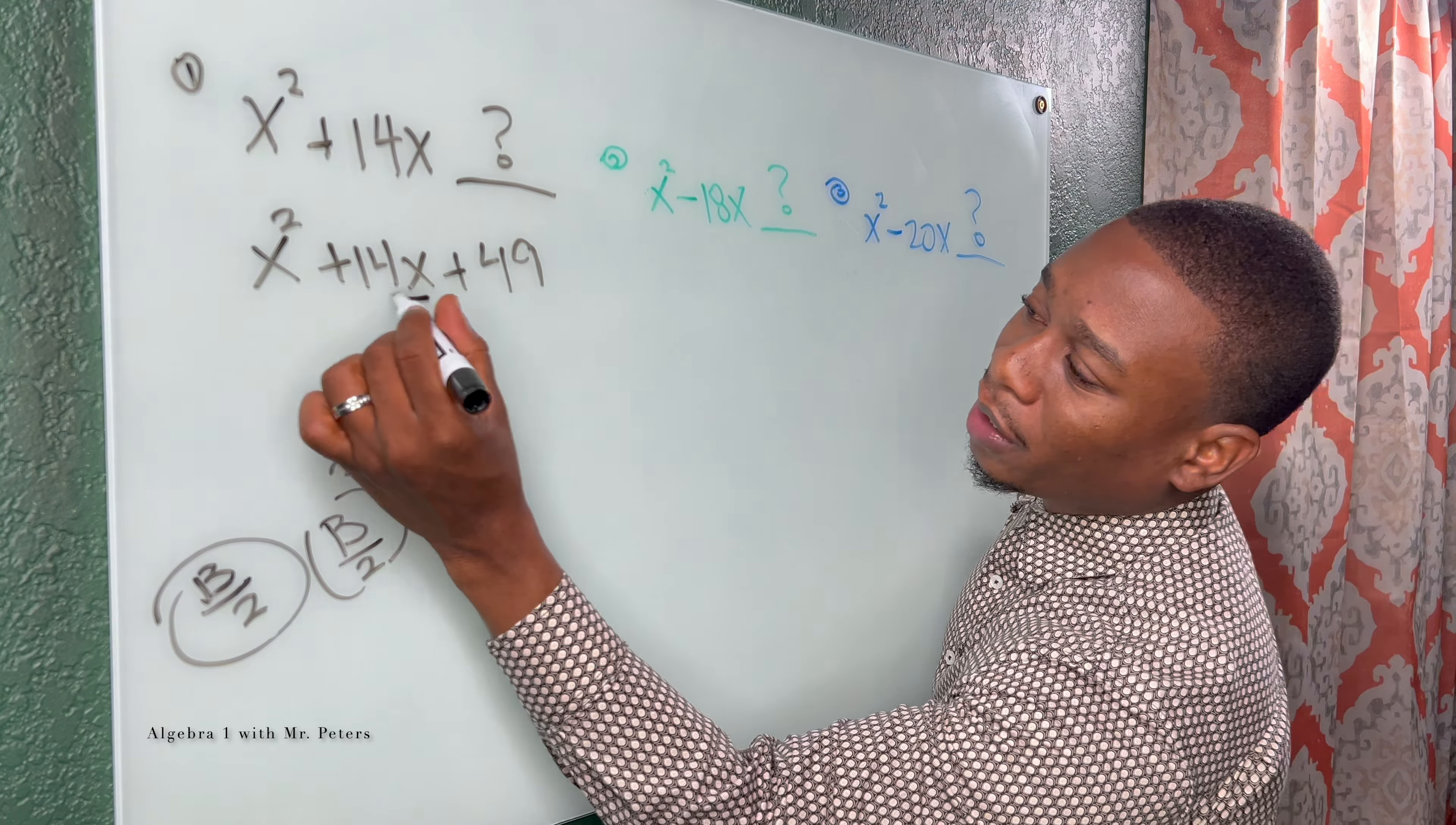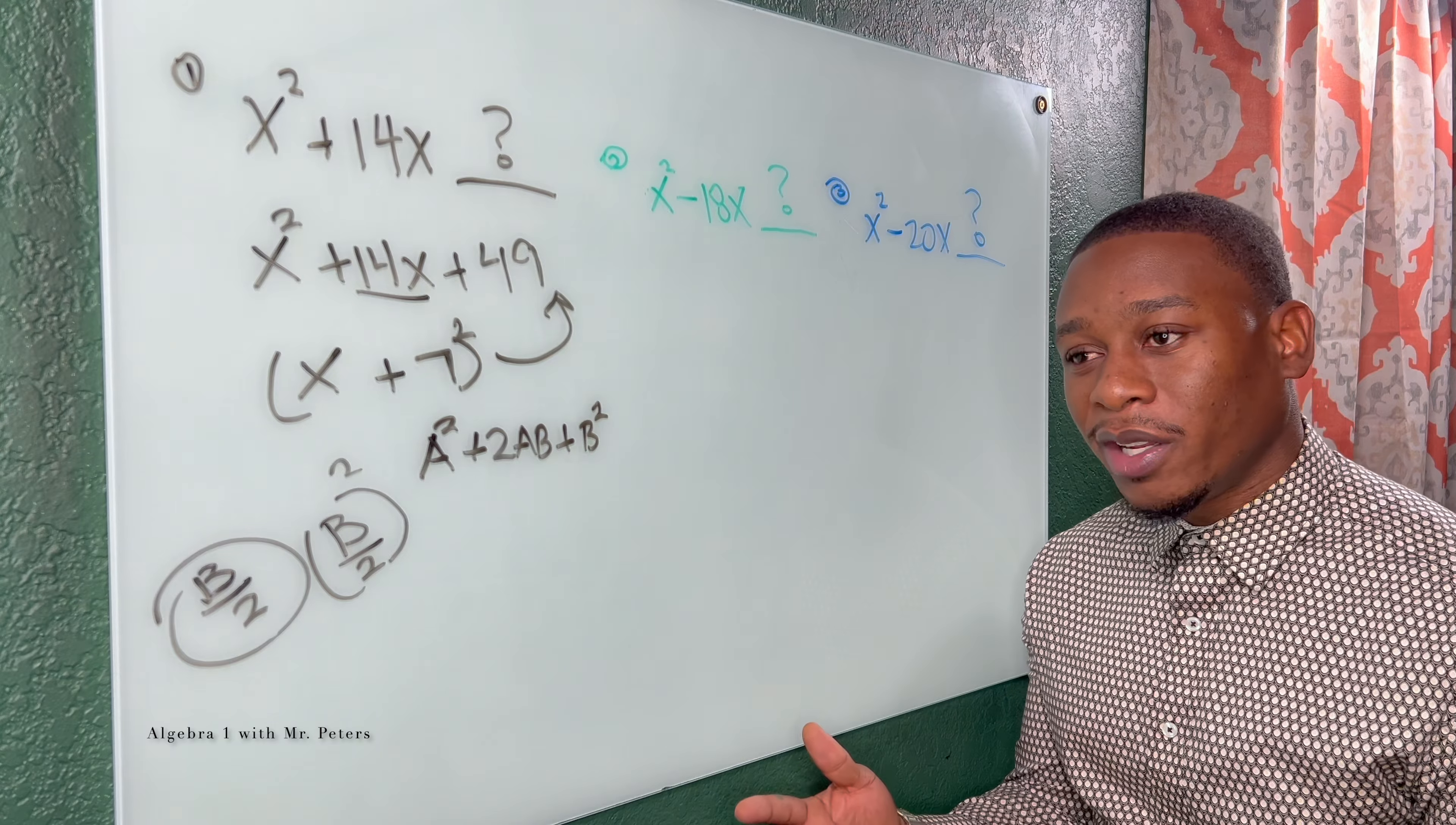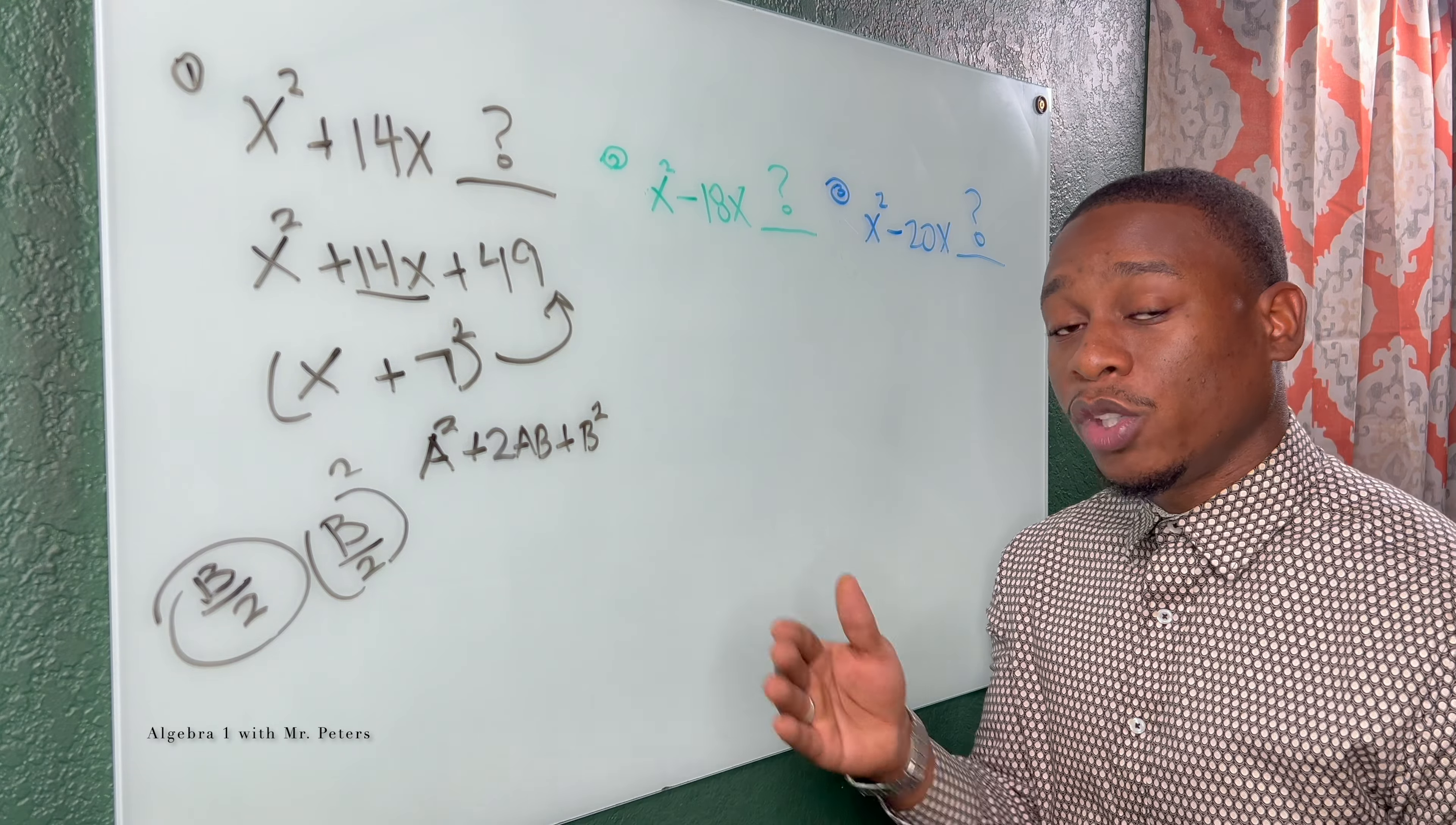And we don't have to, but you can see if it follows that format of a squared plus 2ab plus b squared. But remember we kind of already did that by dividing by 2. We just worked backwards.